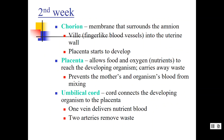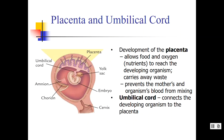The placenta develops from the chorion. It allows food and oxygen to reach the developing organism and carries away the waste from the embryo. The placenta is a filtration system — it prevents the mother's and the organism's blood from mixing, since they're not necessarily the same blood type. But it can't filter everything, which is why we're going to talk about teratogens. The umbilical cord connects the organism to the placenta, which is connected to the mother in the uterus.